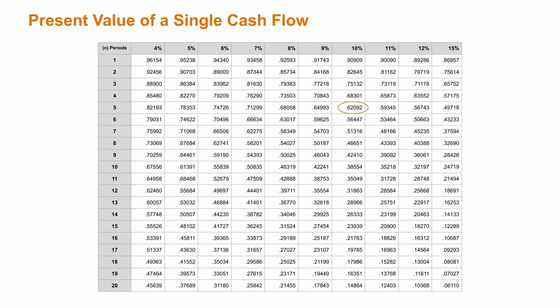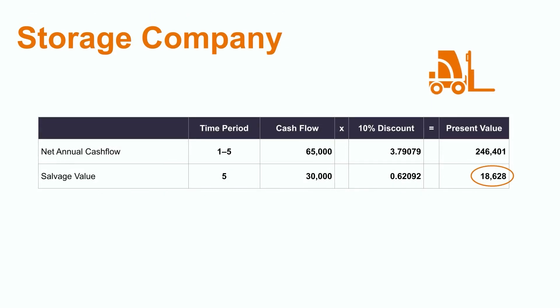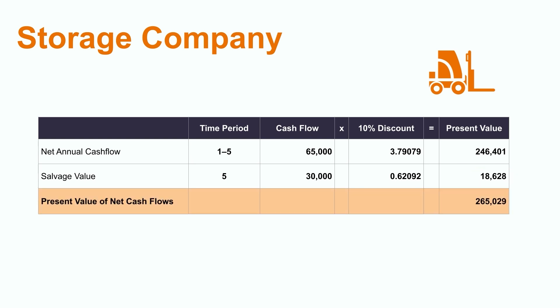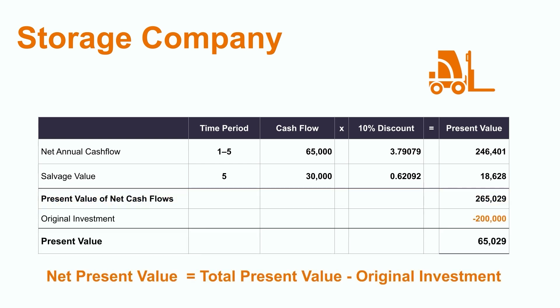The next step is to add the cash flow we're expecting to receive for the salvage value of this piece of equipment. We need to discount the $30,000 future value back to today's dollars. We do this by multiplying it by the discount factor of 0.62092, which we get from the present value of a single cash flow table. This gives us a present value of $18,628, meaning the $30,000 salvage value in year 5 is really worth approximately $18,000 to us today. Adding this to the net annual cash flow gives us a total present value of all expected cash flows of $265,029.